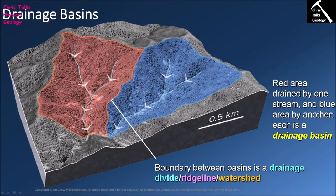The contact between drainage basins marks a point where water can go either way. If you imagine a drop of rain hitting this orange line, in theory it could go into the left-hand drainage basin or into the right-hand drainage basin. These boundaries mark a point of high relief separating drainage basins, and this line is given several terms: the drainage divide, the ridgeline, or the watershed — all meaning the same thing.